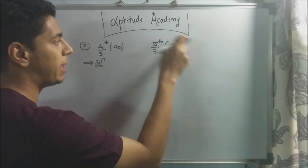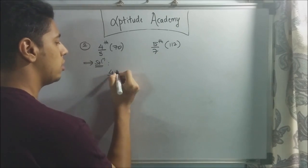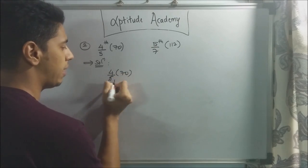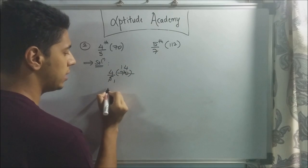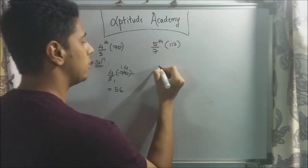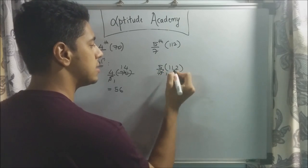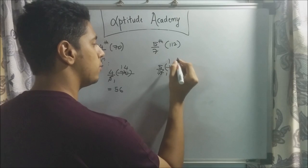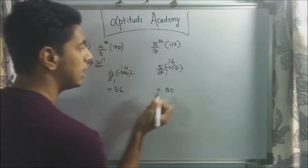4/5 of 70. 5 into 70 is 14. 4 times 14 is 56. So this is the first number, 56. Now, 5/7 of 112. 7 into 112 is 16. 5 times 16 is 80. So 80.